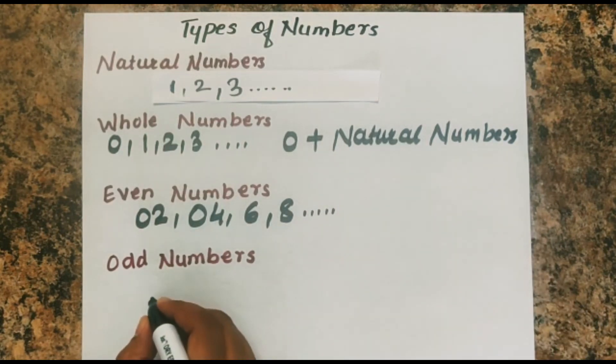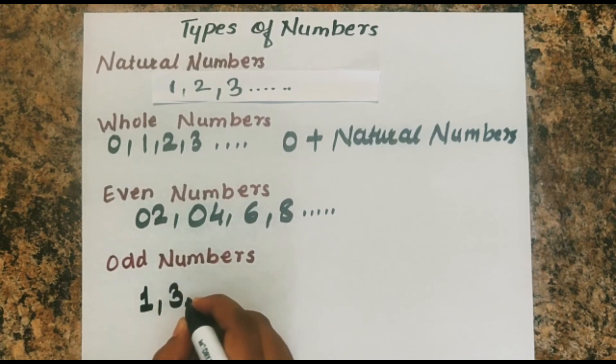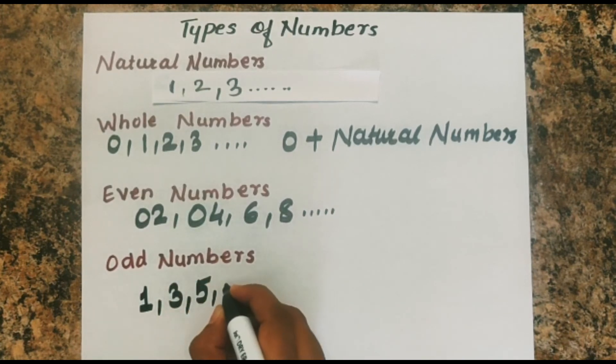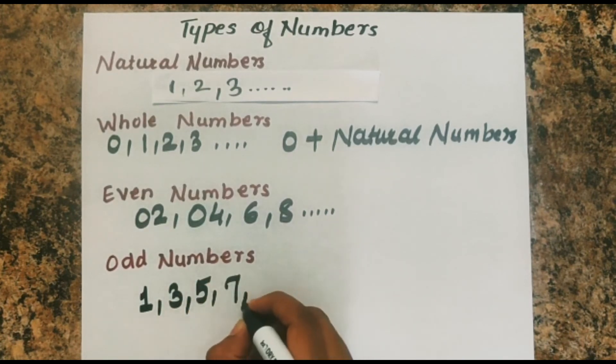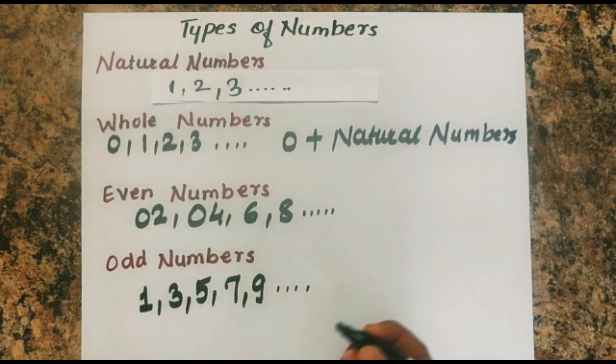And odd numbers are numbers which are not divisible by 2. So 1, 3, 5, 7, 9 are called odd numbers.